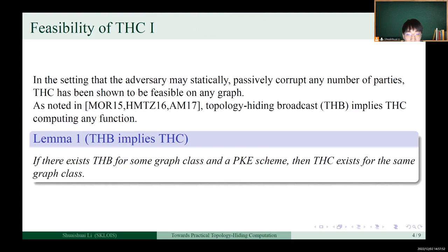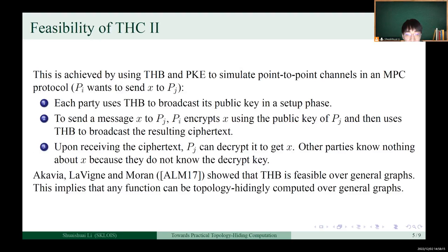In the setting where the adversary may passively corrupt any number of parties, THC has been shown to be feasible on any graph. In fact, if there exists a topology-hiding broadcast for some graph class and a PKE scheme, then THC exists for the same graph class.